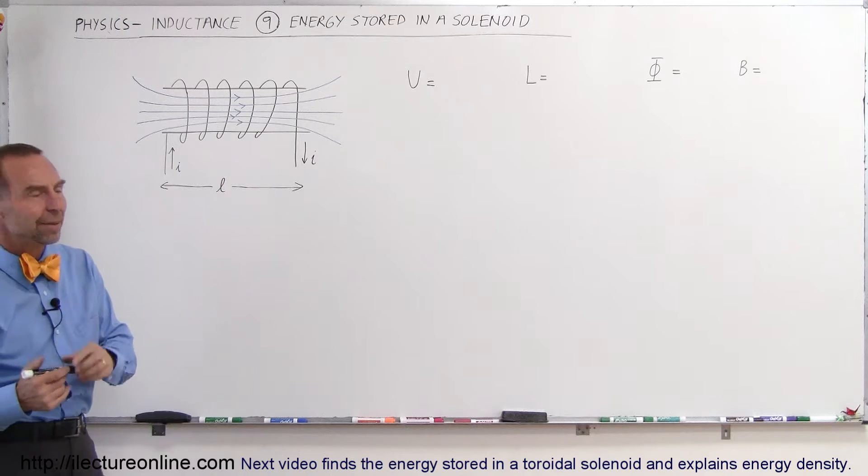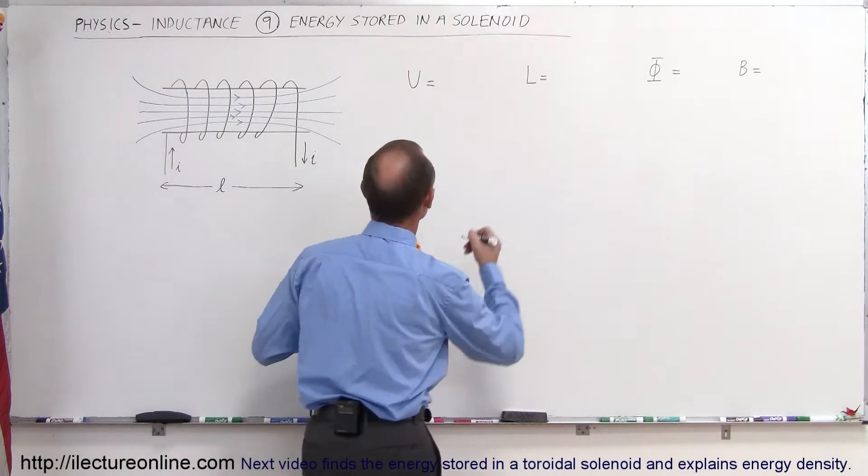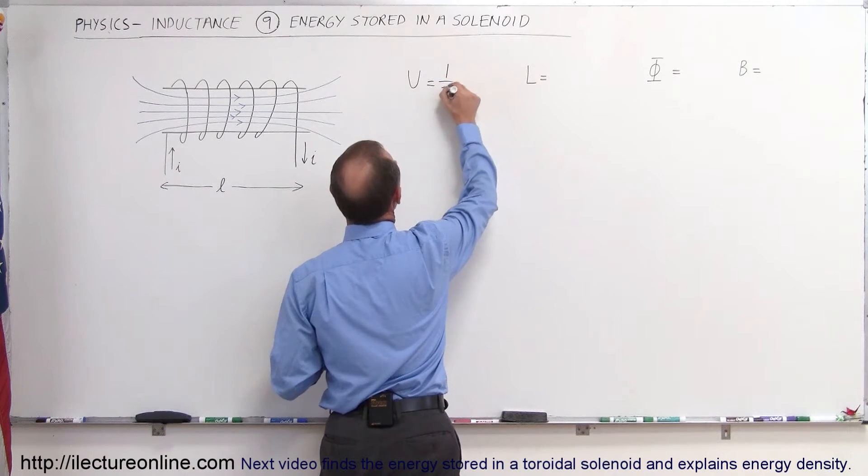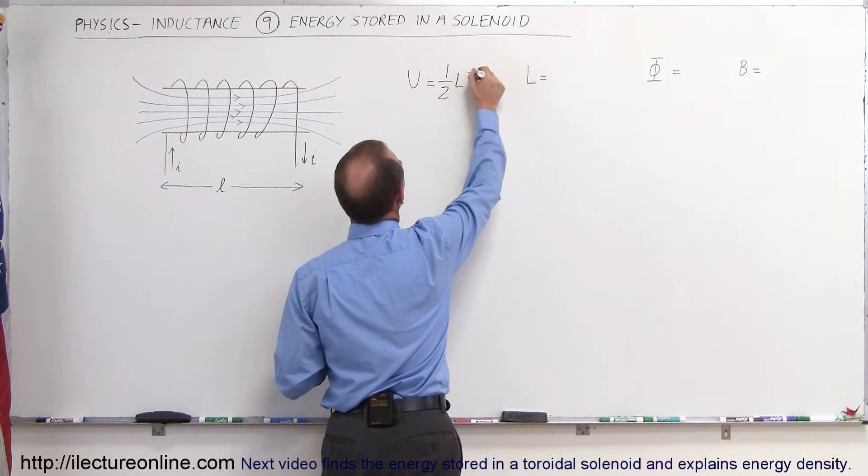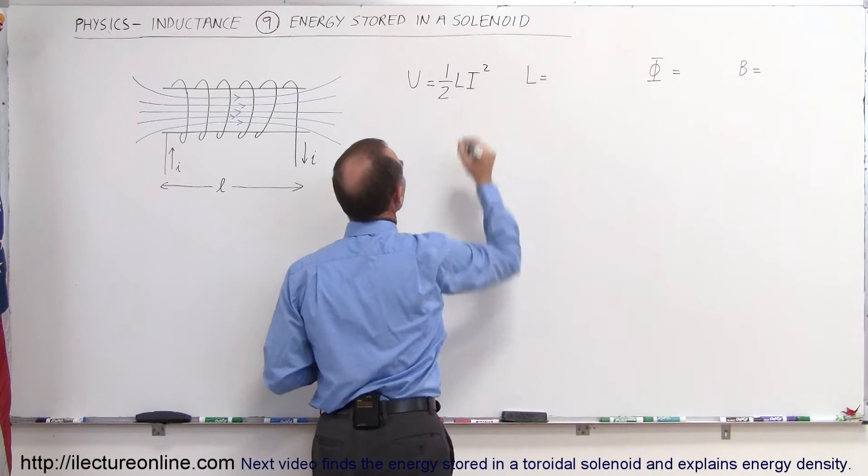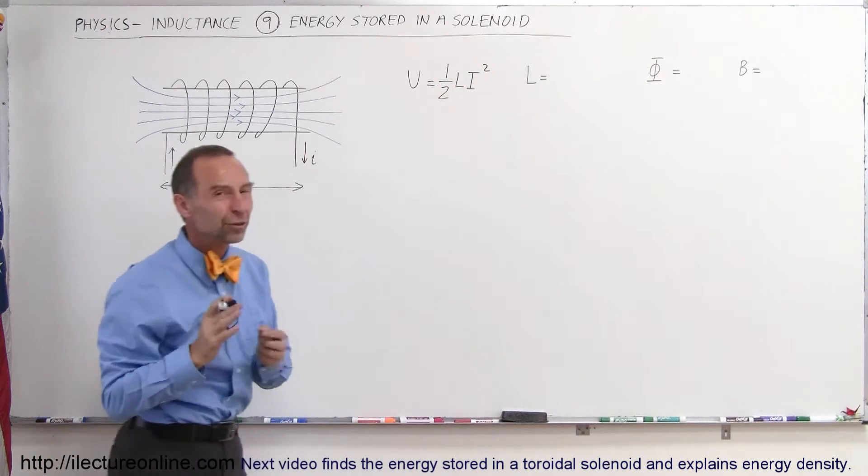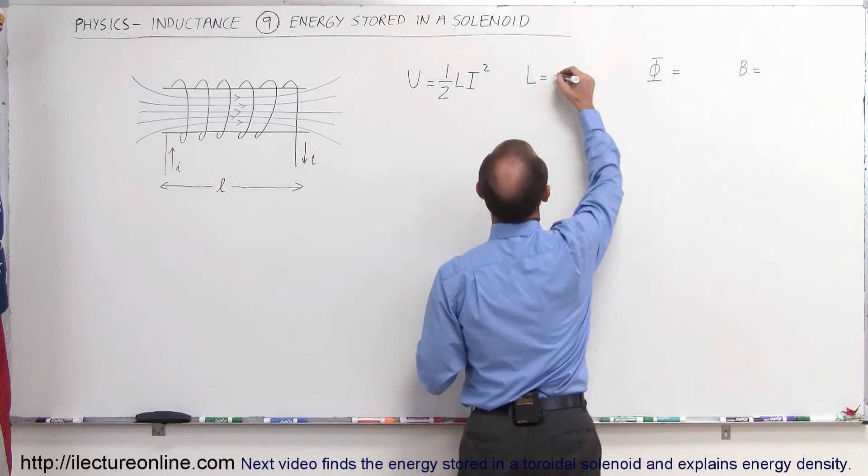First of all, the basic equation for the energy of a magnetic field is equal to one-half times the self-inductance times the steady state current squared. And of course, the self-inductance for a solenoid, or for anything, is the number of turns times the ratio of the magnetic flux going through the loops divided by the current that drives that magnetic flux through the loops.